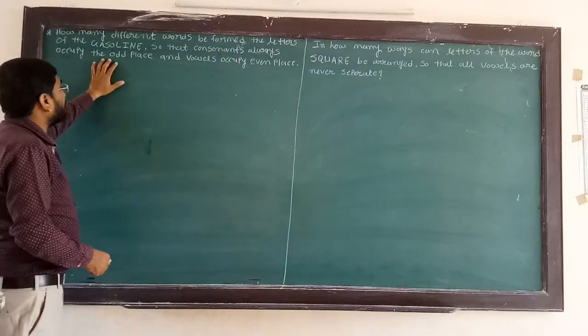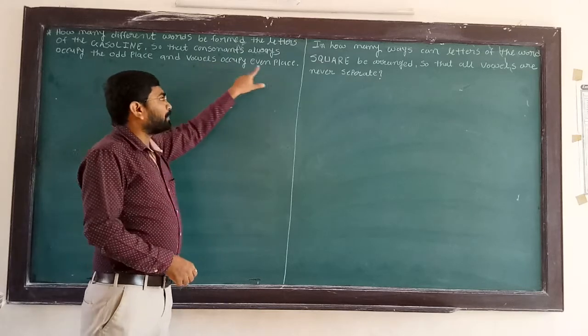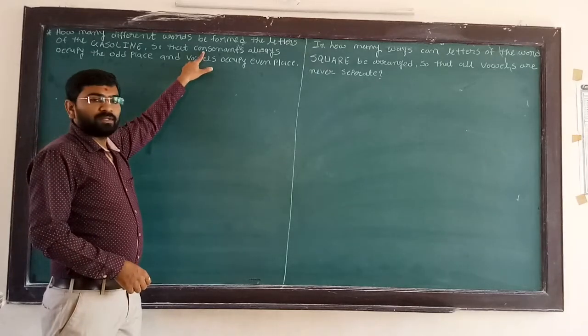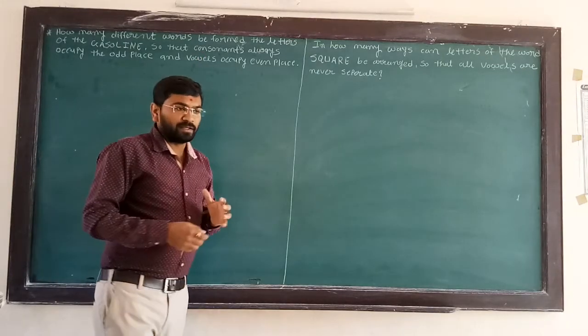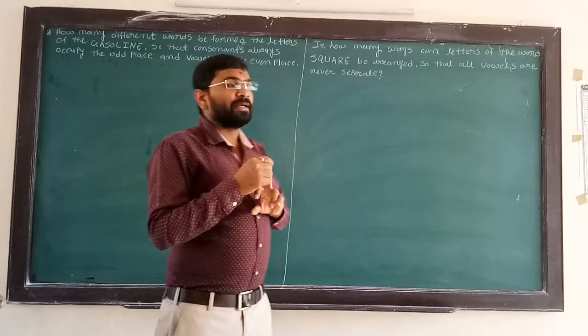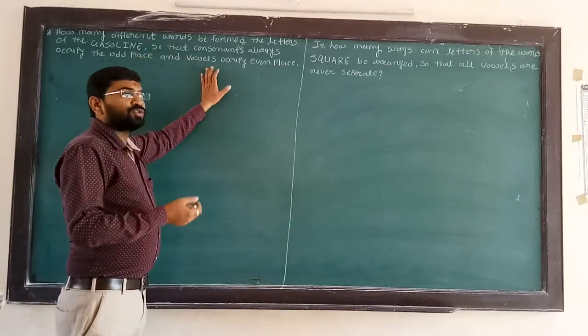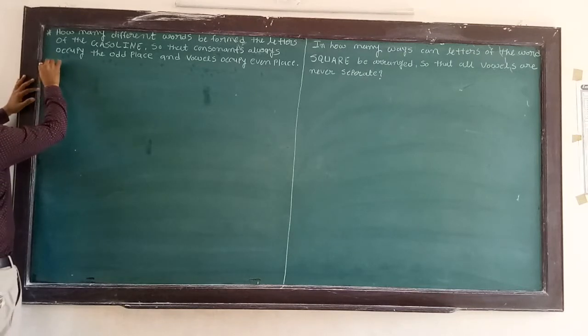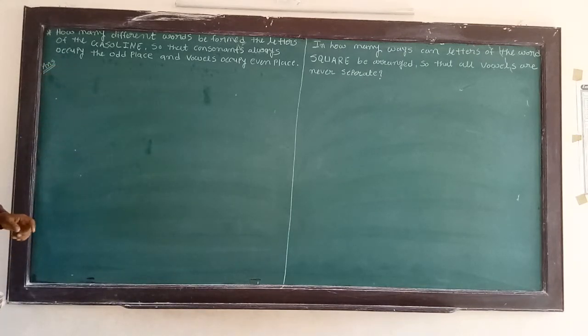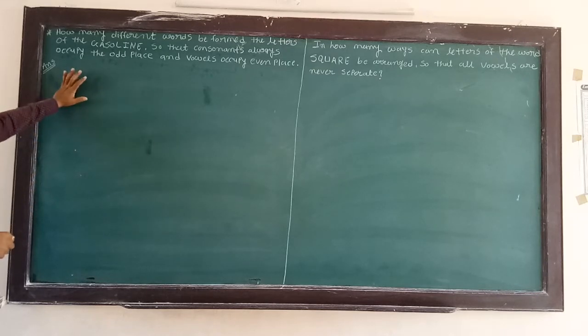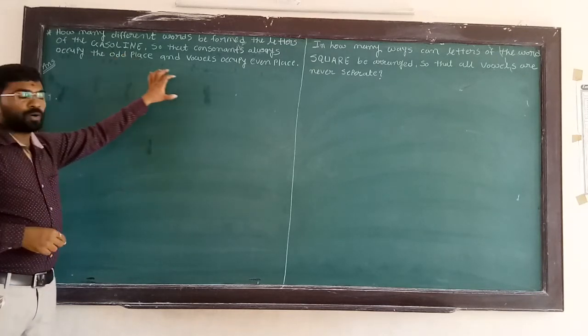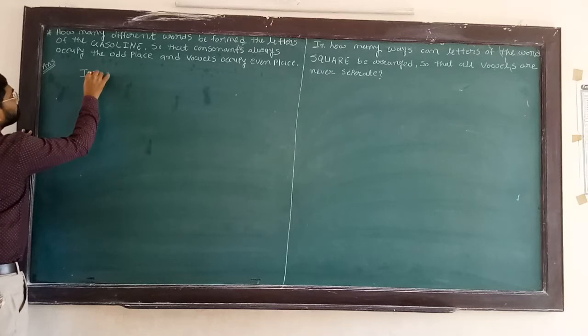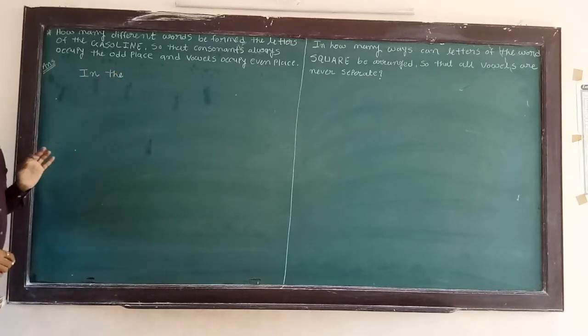Vowels always occupy even places, and consonants always occupy odd places. In English, A, E, I, O, U are vowels, and anything other than A, E, I, O, U is a consonant. Let's start with the word GASOLINE. First, we divide it into consonants and vowels.